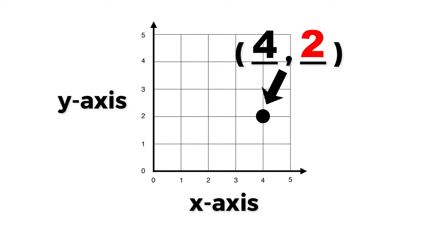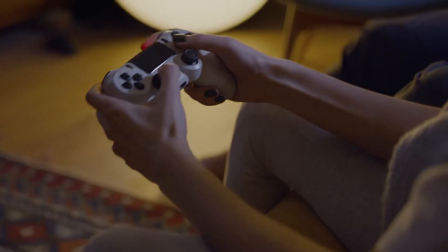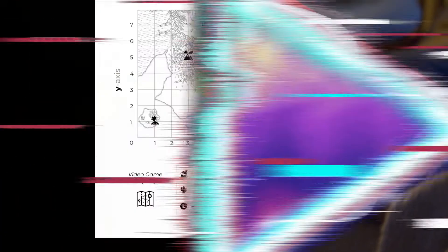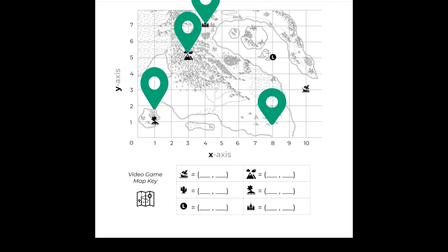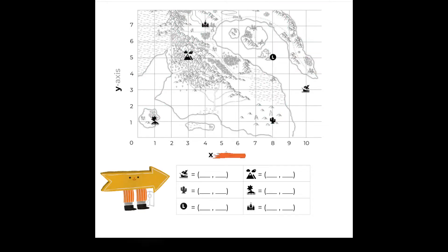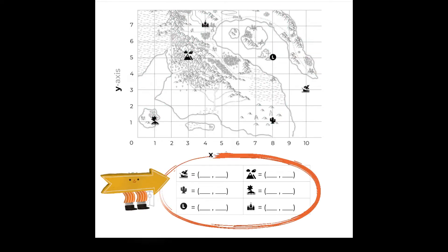But the best way to really understand this skill is by practicing. I need your help finishing the map key for an online game I've been building. The game has lots of different locations, and I need to tell players where each location is using ordered pairs.